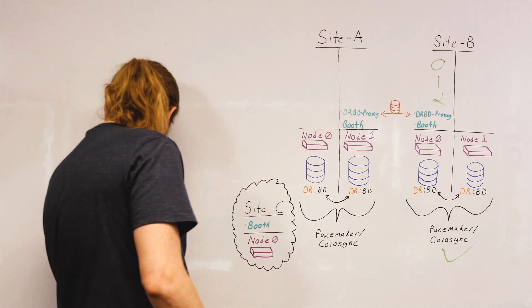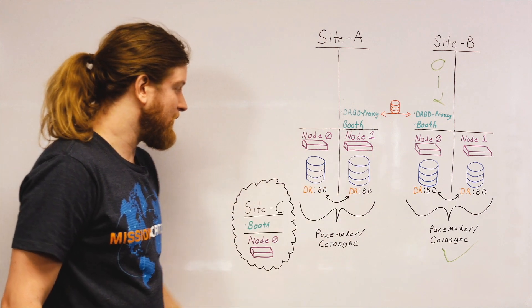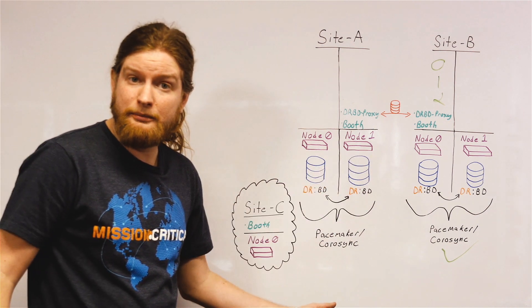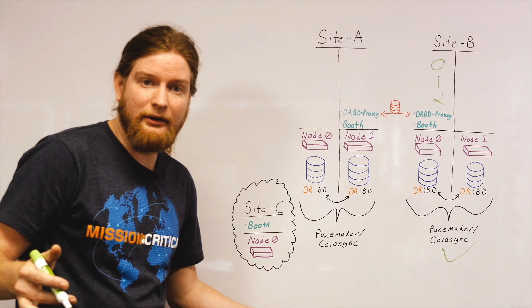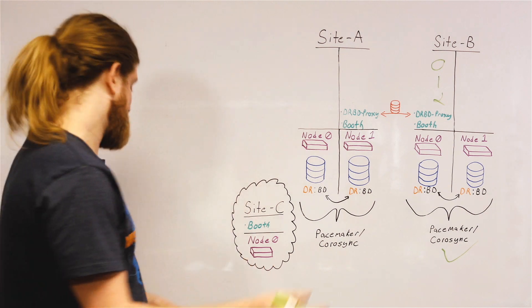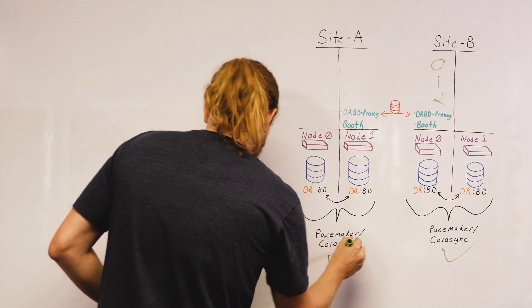If the opposite situation were to happen and site B were to go down, its ticket would expire. And once its ticket has expired, then that ticket is reassigned to site A.